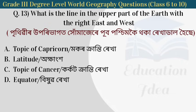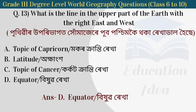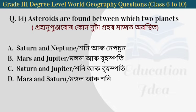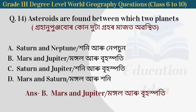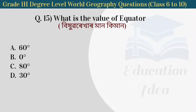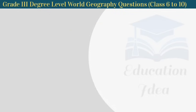Next question: what is the line in the upper part of the earth running east and west? Next question: asteroids are found between which two planets? Next question: what is the value of the equator?